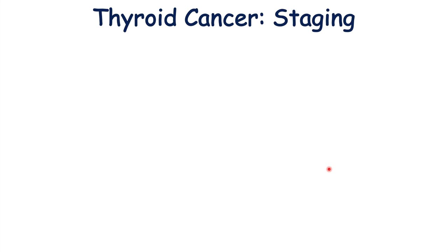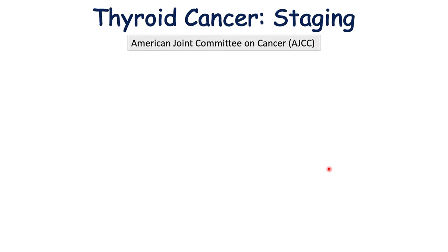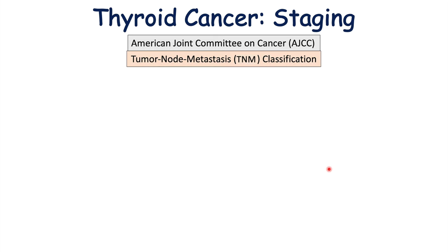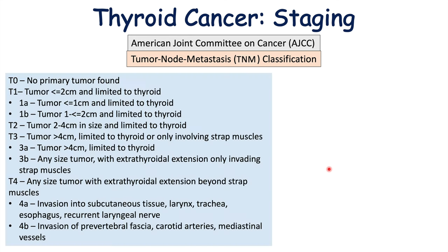When thyroid cancer has been diagnosed, it gets staged. The staging for thyroid cancer comes from the American Joint Committee on Cancer or AJCC, utilizing the tumor, node, and metastasis or TNM classification. The following is applicable to papillary, follicular, and anaplastic thyroid cancers — medullary thyroid carcinoma uses a slightly different staging.